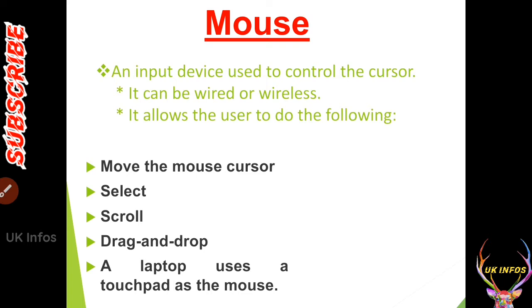The next input device is mouse. It is also very important. It is an input device used to control the cursor. It can be wired or wireless, like a keyboard. It allows the user to move the cursor, select, scroll, and drag. A laptop uses a touchpad as the mouse — there is no separate mouse, but you can use one separately. The built-in one is called a touchpad.